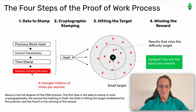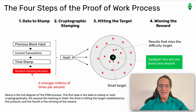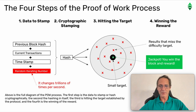Above is the full diagram of the Proof-of-Work process. The first step is the data to stamp or hash cryptographically. The second is the hashing itself. The third is hitting the target established by the protocol, and the fourth is the winning of the reward.